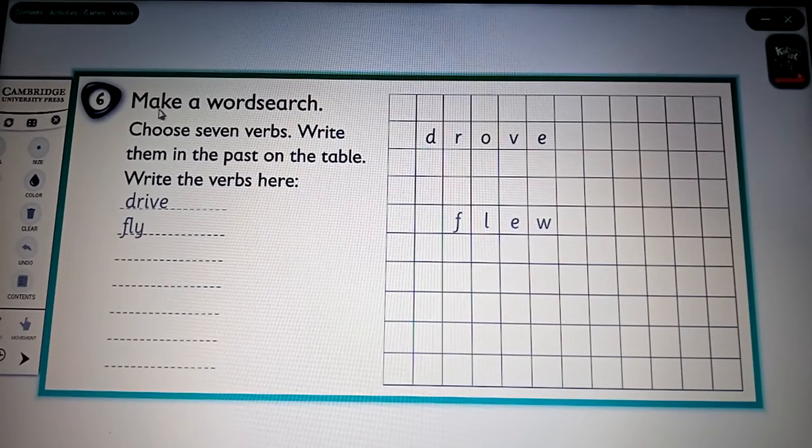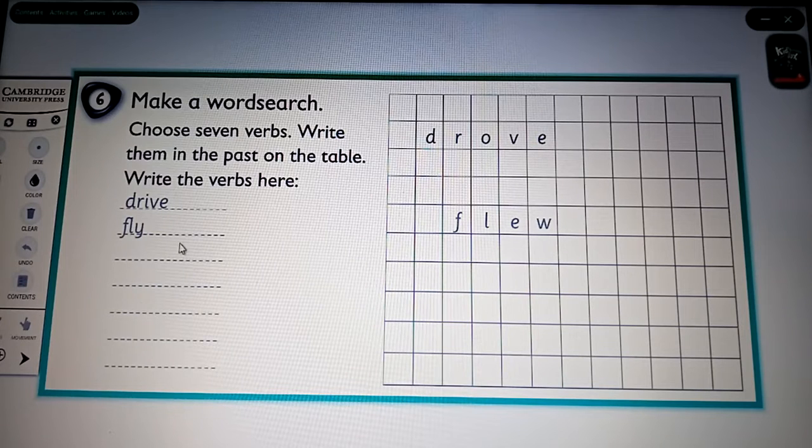Number 6. Make a word search. Okay. Choose seven verbs. Write them in the past on the table. Write the verbs here. Fly, flew. For example. You should make a word search. For example. Go. Run. Ran. Okay. Do these. Okay.